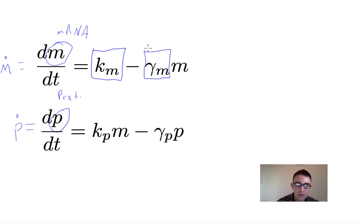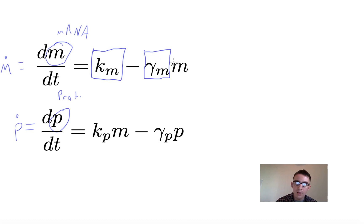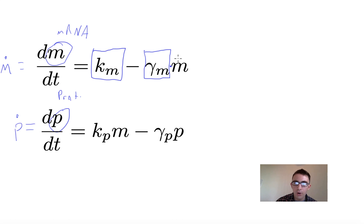Gamma sub m is the degradation rate for the mRNAs. I'm using Greek variables because this is the convention — gamma is commonly used for degradation parameters. This is multiplied by the current abundance of the mRNAs, because degradation requires mRNAs to be present — some fraction of them are being degraded. The production term is independent because it happens regardless of the current abundance of mRNAs.